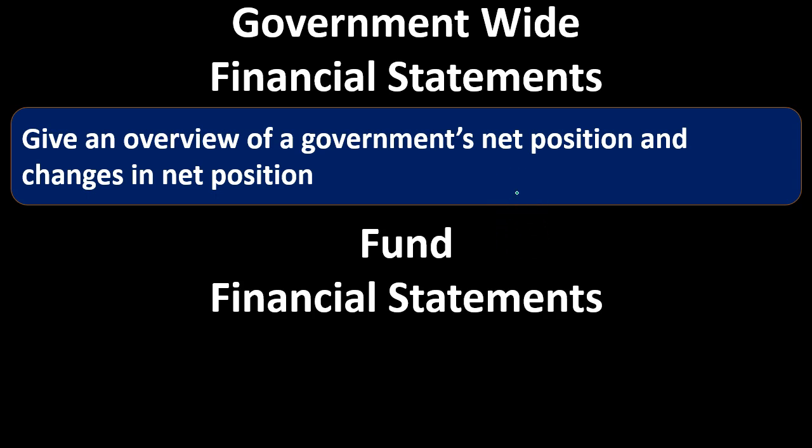One key term that changes is 'net position.' In a for-profit context, the accounting equation is assets minus liabilities equals equity. Here, we use net position — essentially the equity section — representing net assets: assets minus liabilities.